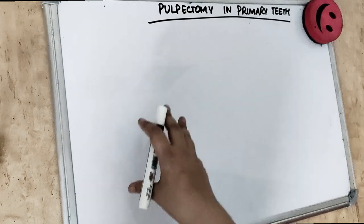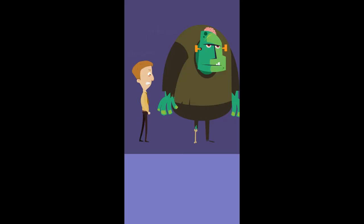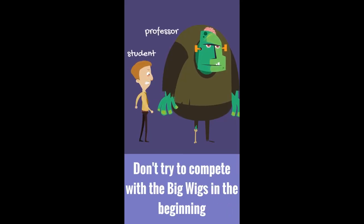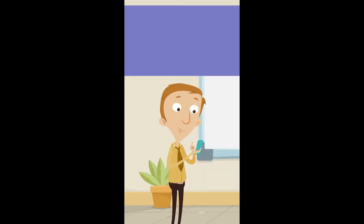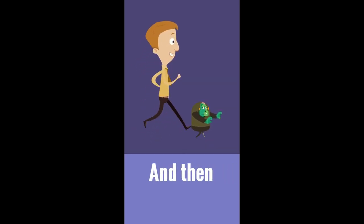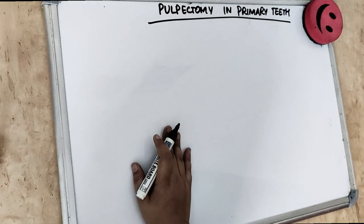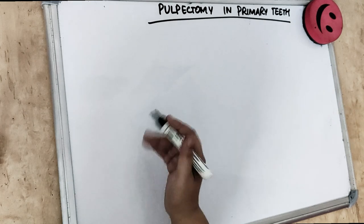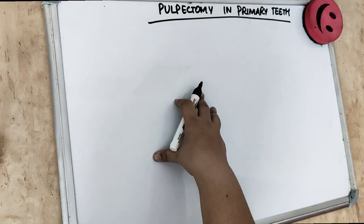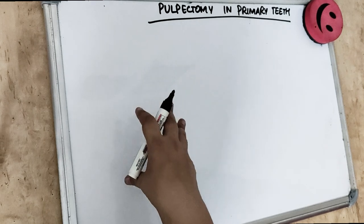Pulpectomy is a very simple procedure — it is just like a root canal treatment done in primary teeth. So without further ado, let's get started. Before we begin, make sure you subscribe to this channel and click on the bell icon so you get a notification as soon as I release a video lecture, which I do every day. Pulpectomy is a procedure wherein we remove the roof and the pulp chamber in order to gain access to the root canals.